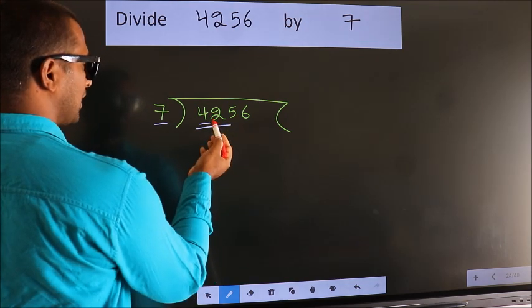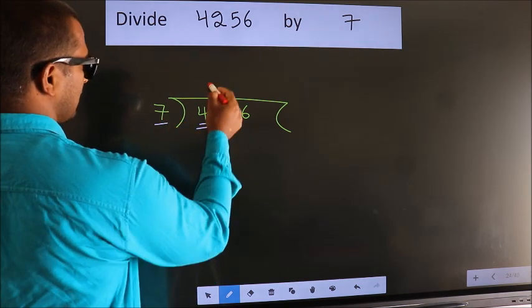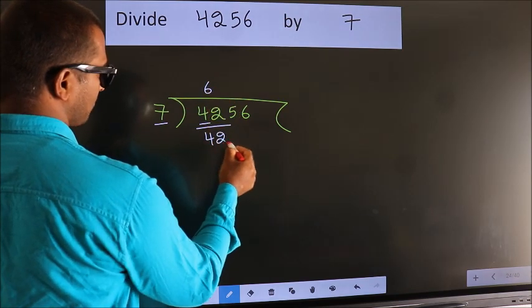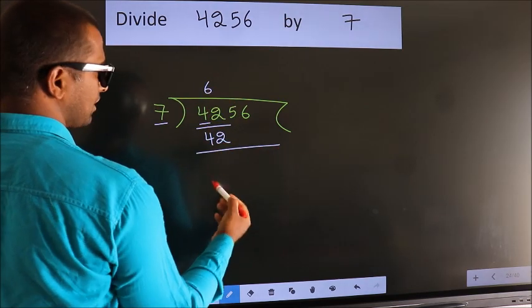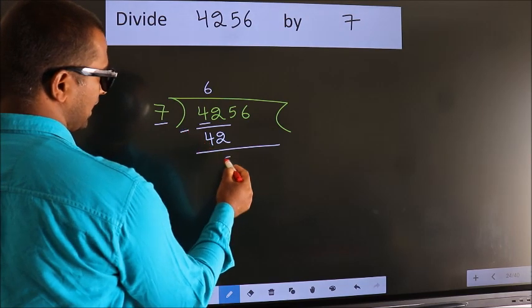When do we get 42? In the 7 table: 7 times 6 equals 42. Now we should subtract. We get 0.